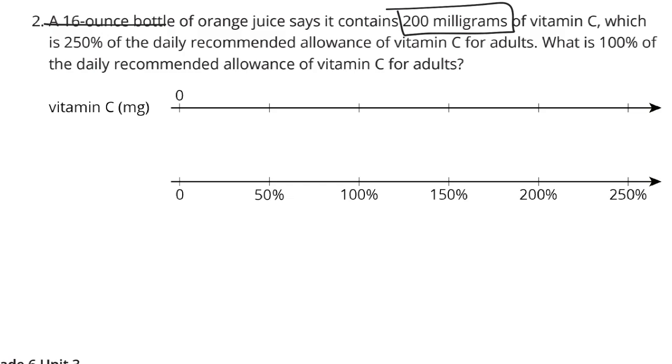So don't be distracted by the 16 ounces. We're going to put that 200 milligrams at the 250%. Now, if we look to see how this is broken up between 0 and the 200, we're going by 50%, 1, 2, 3, 4, 5. So if we take our 200 and divide by 5, that gets us 40 milligrams for each of those 50%.